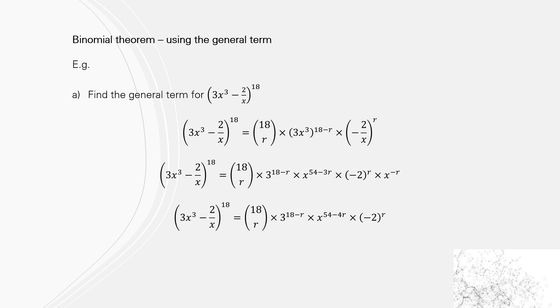Now we're just going to use some of our rules with indices. You get 3^(18-r), and then we take the x to the power of 3 and multiply that by the 18 and r, so you get x^(54-3r). Then we separate the two terms. You get (-2)^r, and because x is to the minus 1, that becomes x^(-r).